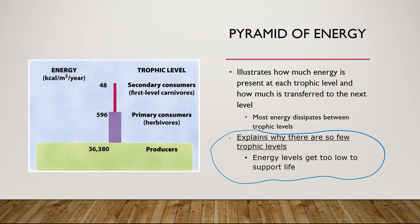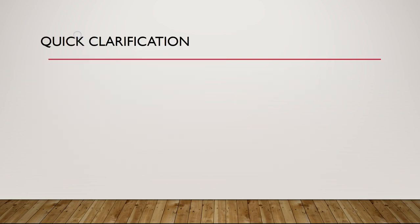Because the energy loss is so great with each trophic level, we can really only support a few trophic levels — at most five. Now that we've gone through what happens to the total amount of energy, numbers, and biomass as you move up the food chain with each successive trophic level, it's important to understand that those pyramids are simplifications of nature.